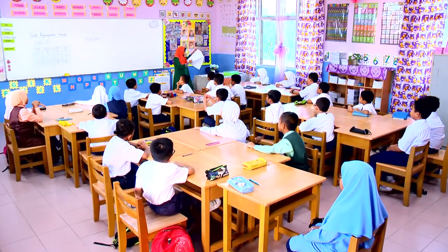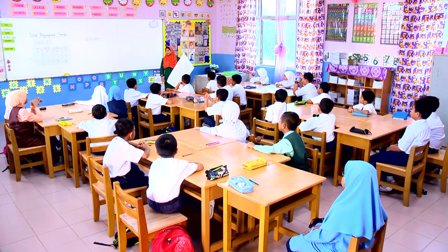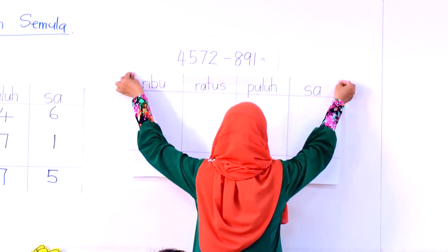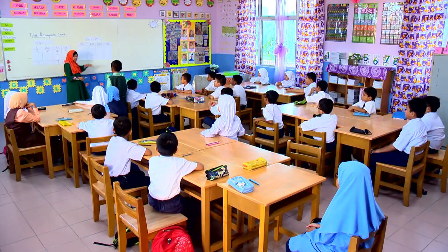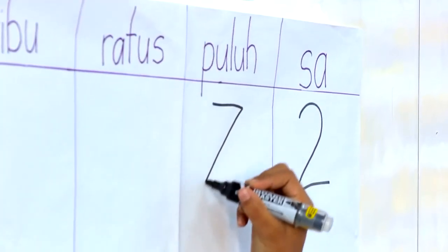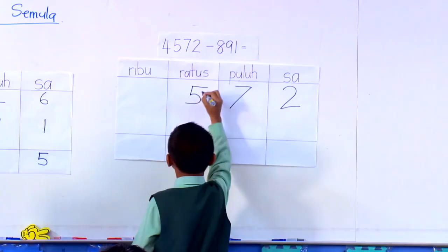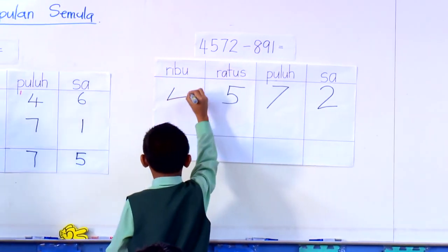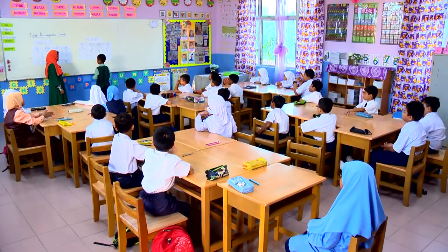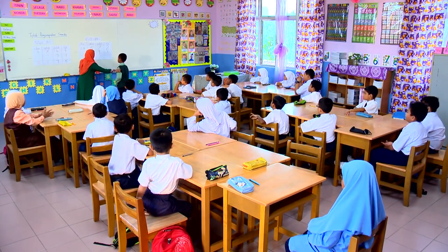Saya akan paparkan jadual nilai tempat ini untuk kamu jawab. Kamu gunakan pen marka warna hitam untuk kamu salin nombor yang asal. Dan apabila kamu pinjam, kamu gunakan marka pen merah. Dan jawapan yang melibatkan penolakan, gunakan warna biru. Dan nombor yang asal guna warna merah. Sekarang Zuhafizi, kamu berada di tepi ni dahulu. Saya akan tanya.